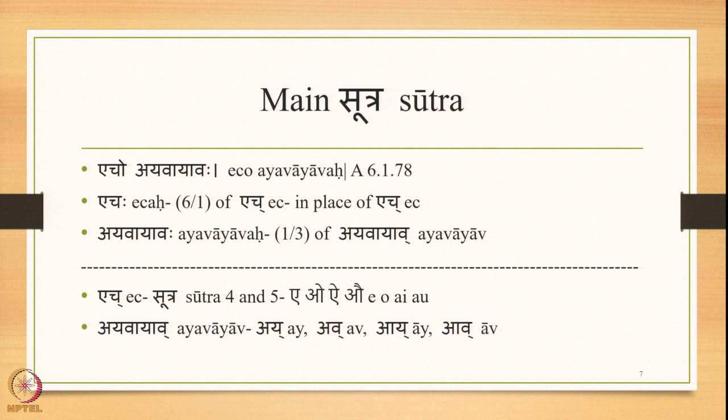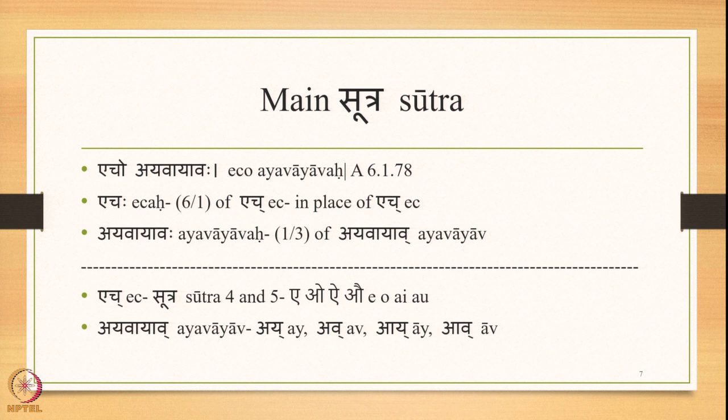There are four sounds which are part of Ech: E, O, Ai and Au. Achi is continued from context, so Echoyavayavaha means: immediately before Ach (a vowel), Ech is substituted by Ay, Av, Ay and Av respectively.